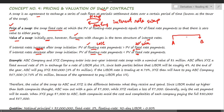Company A decides to pay a fixed rate of five percent to Company B. The contract is for a period of one year. Against this, Company B decides to pay Company A a floating interest rate of LIBOR plus one percent — whatever the LIBOR is, they add a margin (also called spread) of one percent.